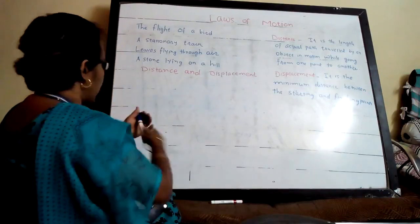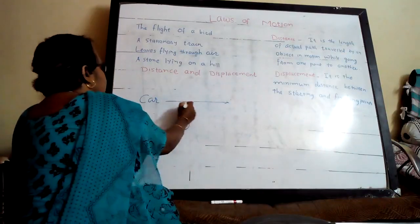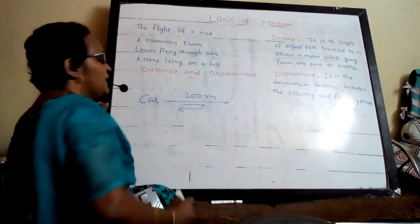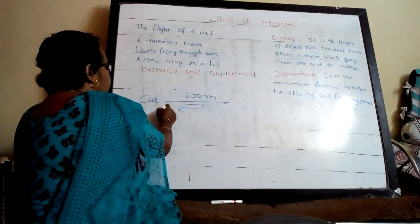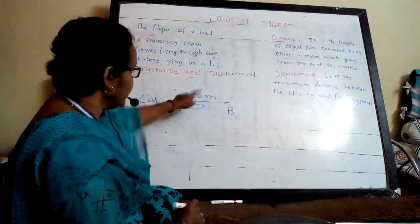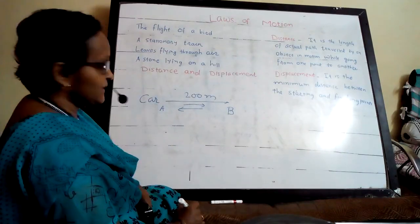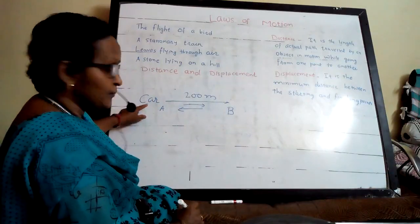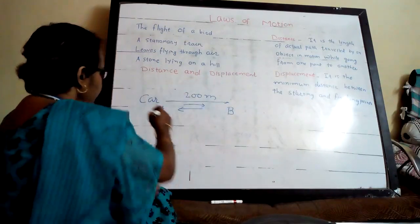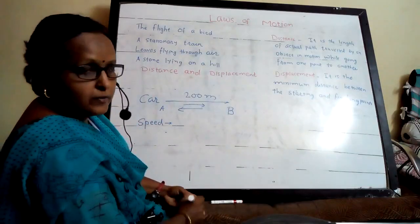Another example: a car goes straight from point A to point B — a distance of 200 meters — and then returns back from point B to point A, again 200 meters. The length of actual path covered by the car is 400 meters. But displacement here is zero, because the starting and ending points are the same.